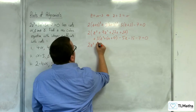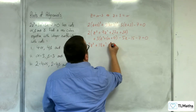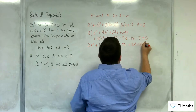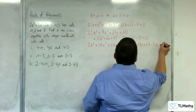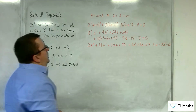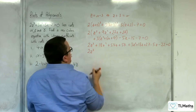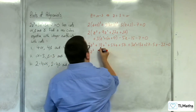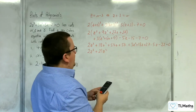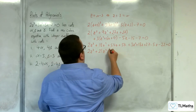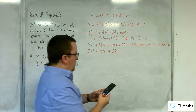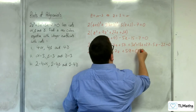So we've got 2z cubed, plus 18z squared, plus 54z plus 54, plus 3z squared, plus 18z plus 27, take away 5z, take away 22 equals 0. Collecting terms: 2z cubed, then 18 plus 3 is 21z squared, and 54z plus 18z take away 5z is 67z, then 54 plus 27 take away 22 is plus 59 equals 0.